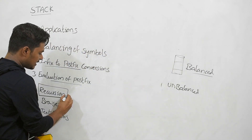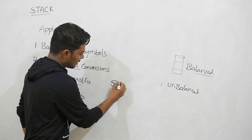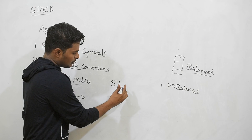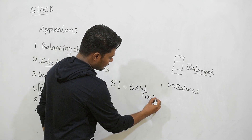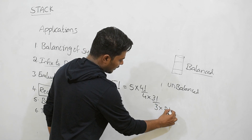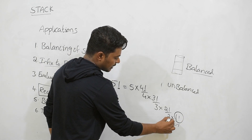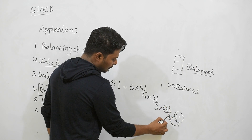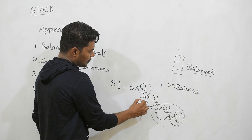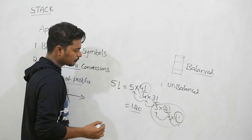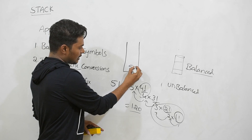Recursion is also one of the main applications of the stack. Any function which calls itself is called recursion. For example, to find 5 factorial, we need 5 into 4 factorial; for 4 factorial, we need 4 into 3 factorial; and so on down to 1 factorial, which equals 1. It then returns and computes back up: 2, then 6, then 24, finally giving 5 factorial equals 120.